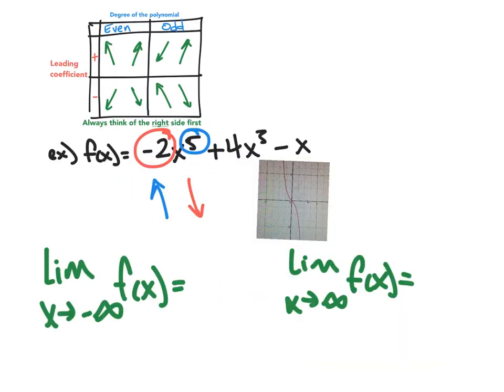So tying it all together, writing this in limit notation, as x goes to negative infinity, f(x) went to positive infinity. And on the right side, whenever x went to positive, f(x) went to negative infinity.